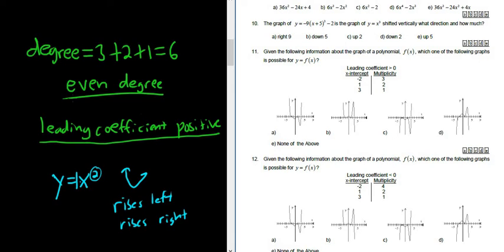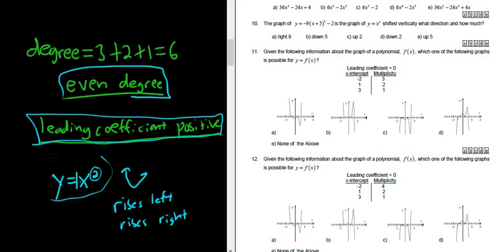This is called the leading coefficient test. You look at the degree and you look at the leading coefficient. Then you think about the simplest function you know. It looks like this. So now you just have to pick the choice that kind of looks like this. That would be choice A. Choice A is the correct answer.